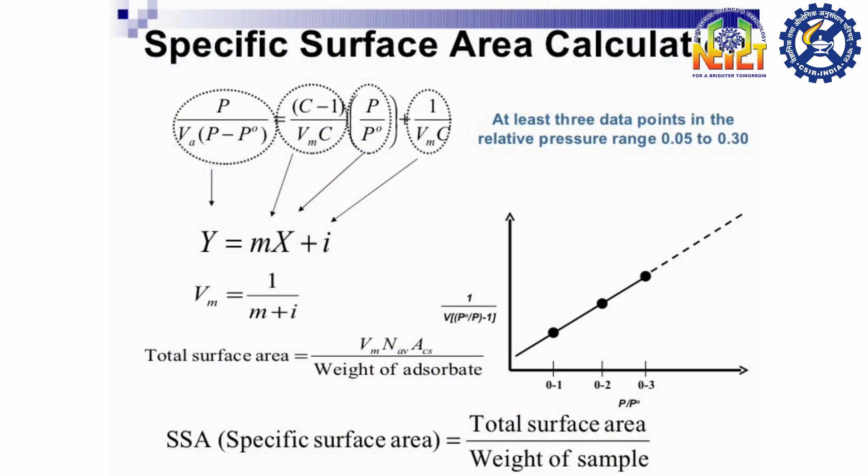This is the equation for measuring BET surface area. We have to find the intercept and slope from the graph to find BET constant and volume absorbed in monolayer.